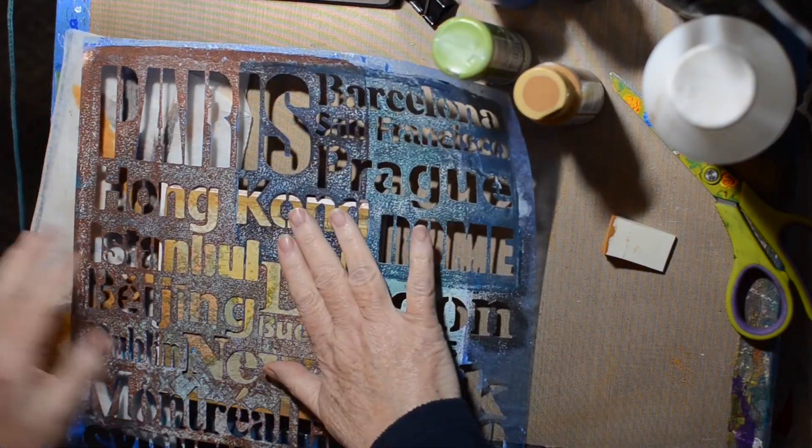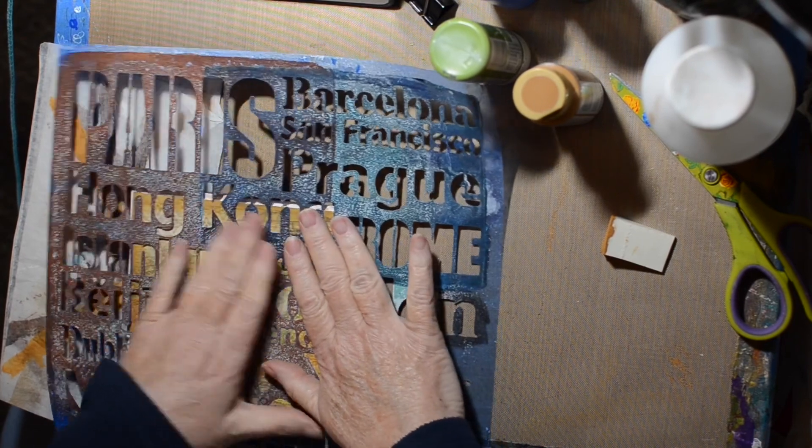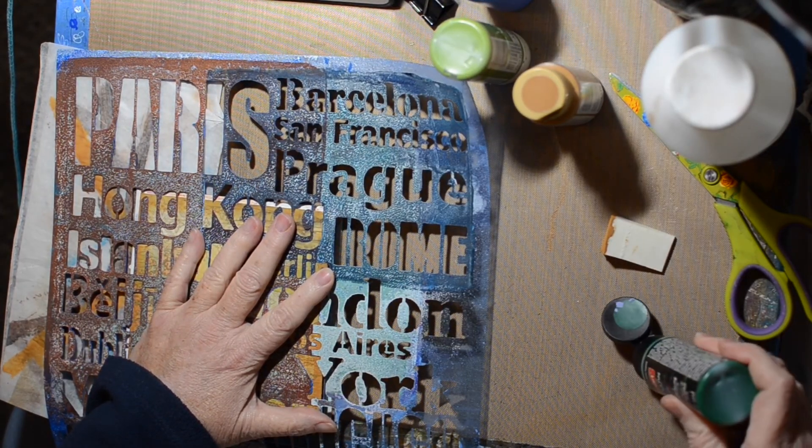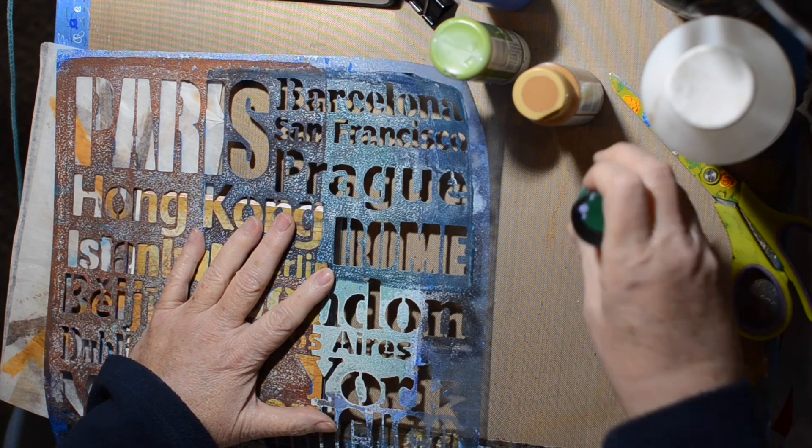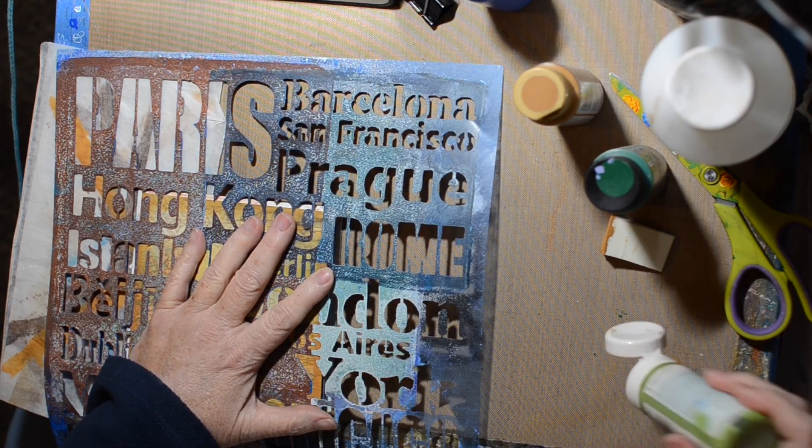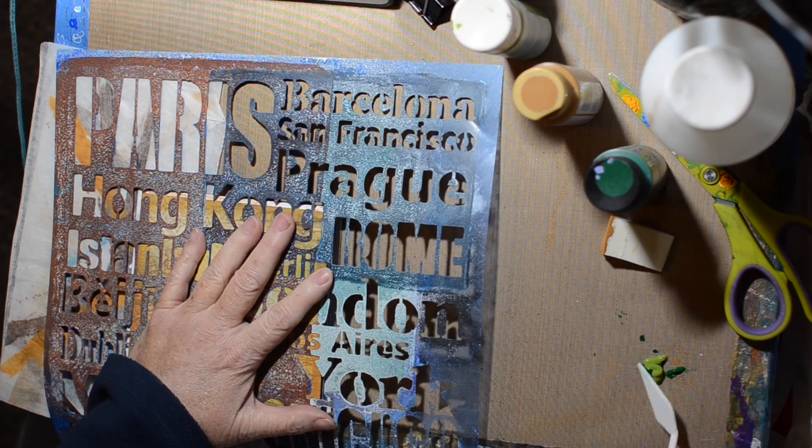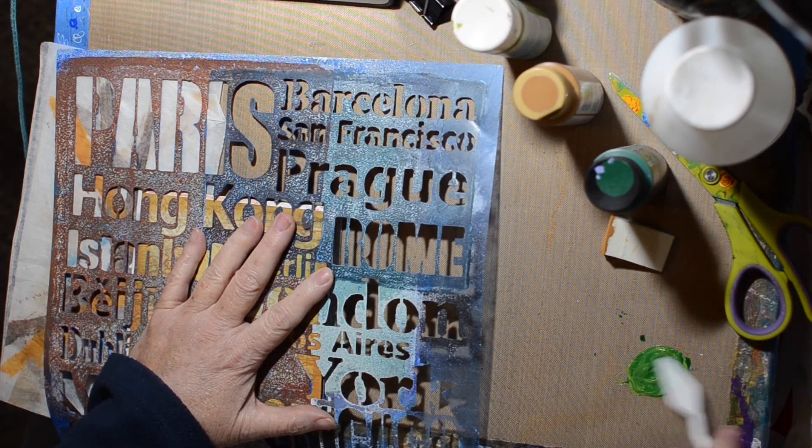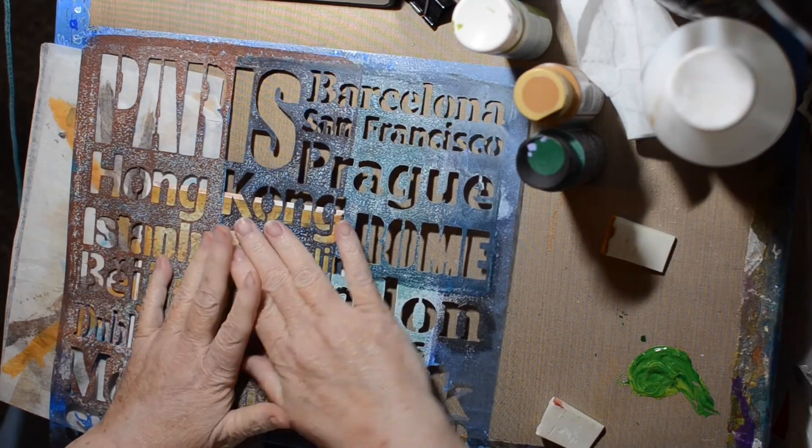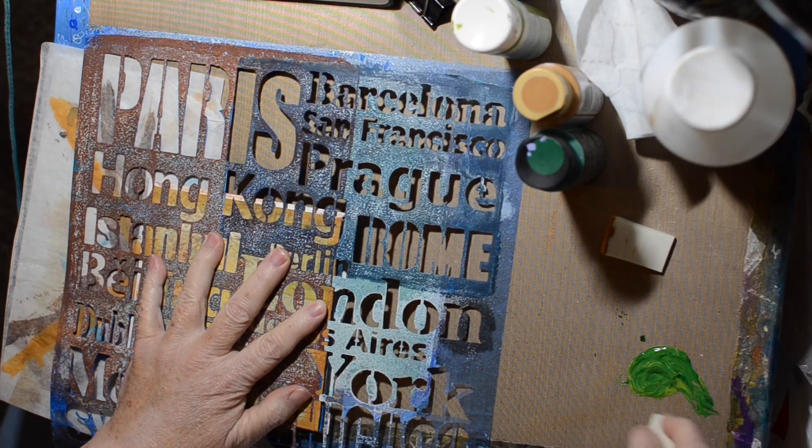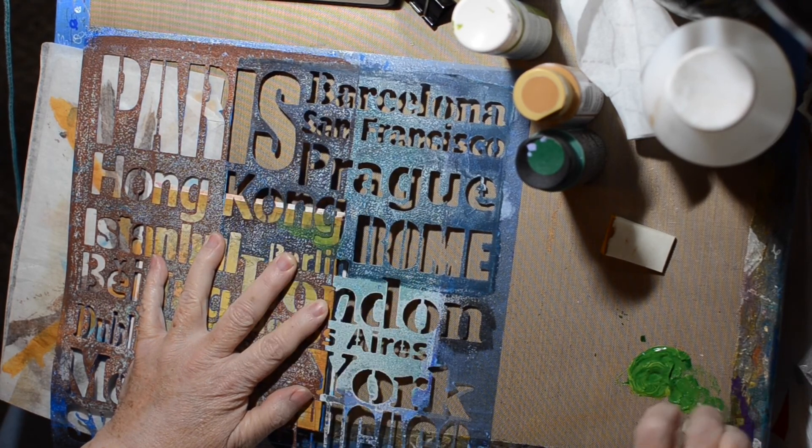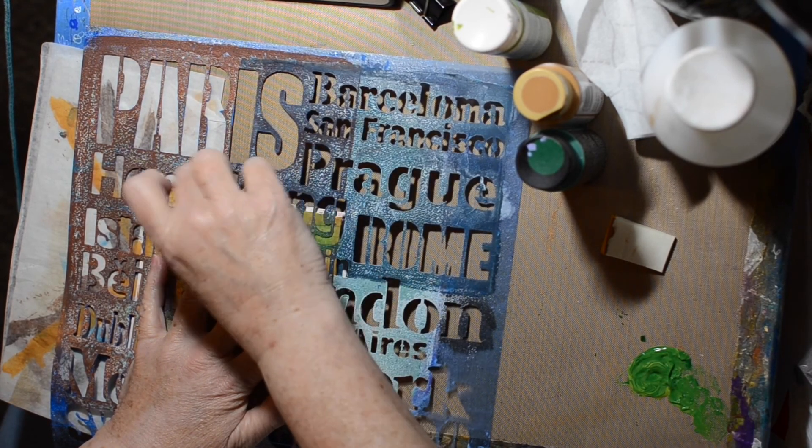And I had this tissue, I believe it's a Tim Holtz tissue, that had a map on there. Now that I've done all this to it, you can hardly even tell. And then the colors were green, blue, and sort of an ochre yellow color. So you didn't see me glue the map down, but then I took the yellow ochre color and went around the edges, just as a kind of framing device.